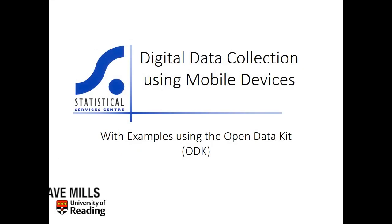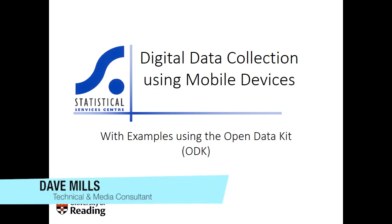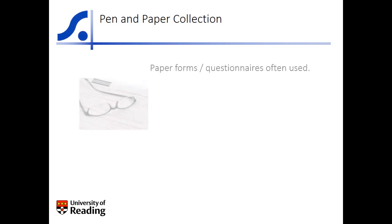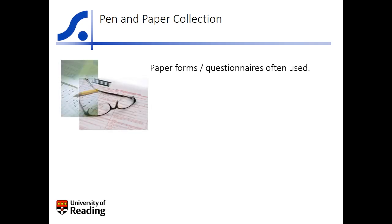Traditionally, data have been collected using pen and paper. Whether it is a single researcher taking repeated daily measurements, or a team of enumerators performing a detailed survey of hundreds of households, paper forms have been the standard. As a technology, pen and paper is both reliable and cheap. It is also easy to use, and as such requires very little investment.